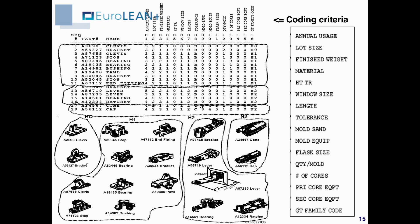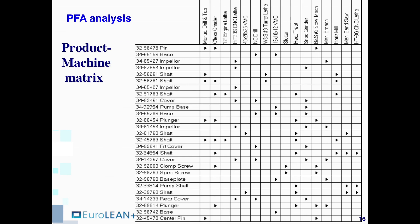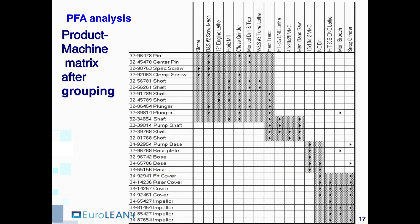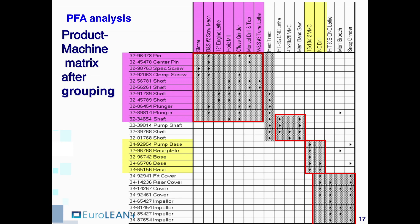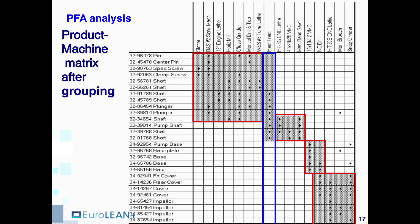In the flow analysis, we use as a data source the product-machine matrix, or product-machine incidence matrix, where for each product on the left we indicate which machine at the top is needed to perform one or more processes. This matrix contains no sequence information. By regrouping the rows and columns, we can cluster them into homogeneous sub-parts, which indicate the possibility of creating a cell covering the machines in the block and producing the linked products. We also see that some machines don't really belong to one unique cell, leaving us with the option to either keep them separate as a shared resource, or duplicate them and assign one to each separate cell.